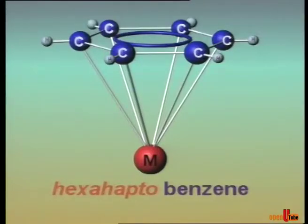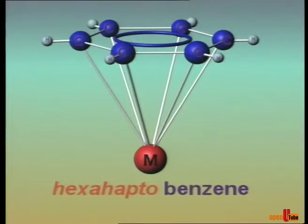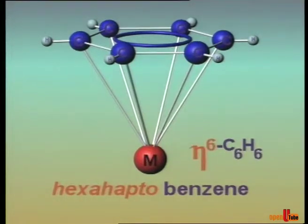Benzene is a hexahaptoligand. Six adjacent carbon atoms of benzene are directly bonded to the metal. It is indicated by the Greek letter eta followed by the superscript number six.